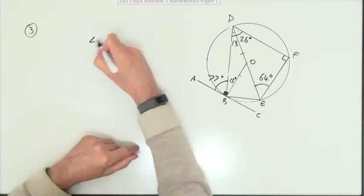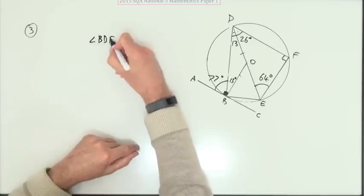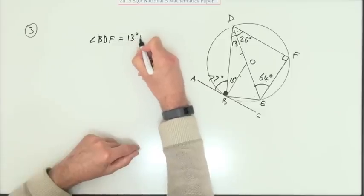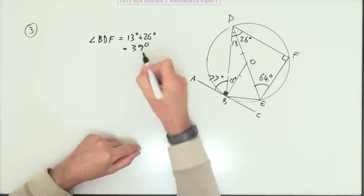So that's a 13. And finally, I can say, well, my angle BDF is going to be 13 and 26, which is 39 degrees.